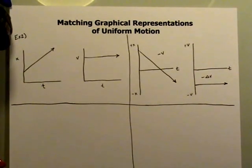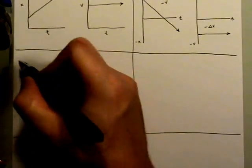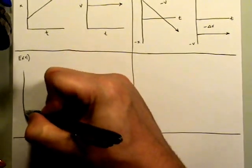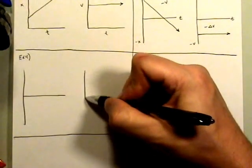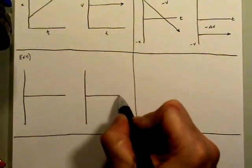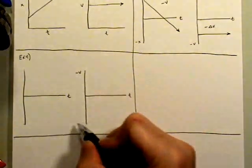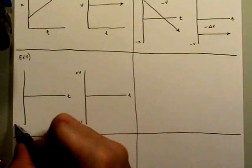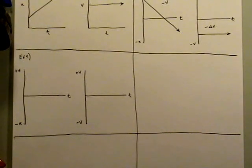So we've looked at positive, we've looked at negative — now let's look at combinations of positive and negative, or possibly even no motion at all. For example four, we'll keep it a little simple. We're really just concerned about the shape of the graph.